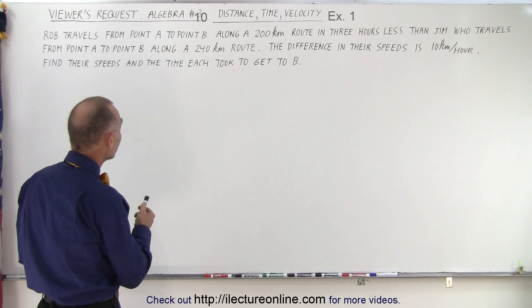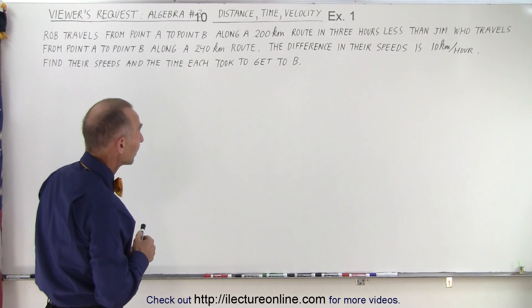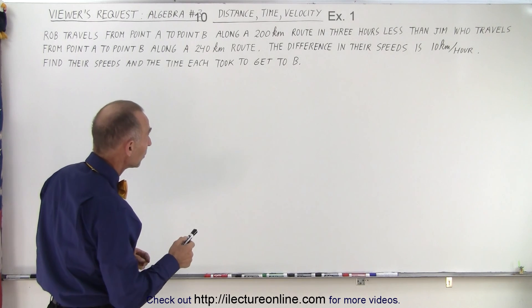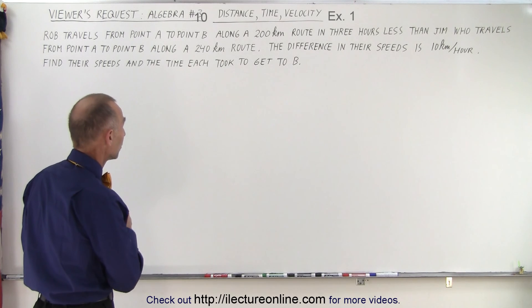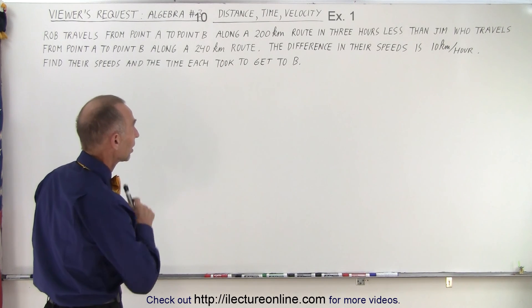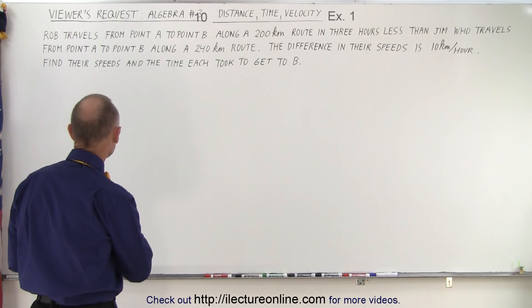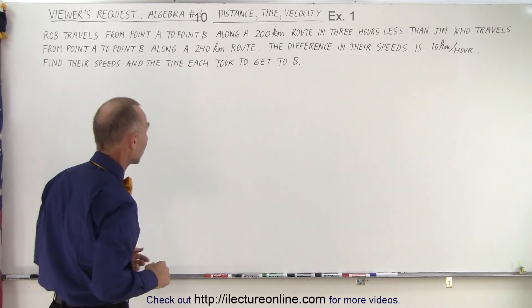Rob travels from point A to point B along a 200 kilometer route in three hours less than Jim who travels from point A to point B along a 240 kilometer route. The difference in their speeds is 10 kilometers per hour. Find their speeds and the time each took to get to B.